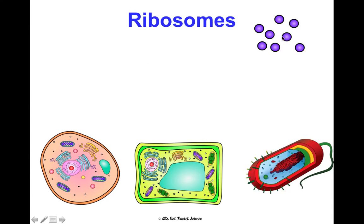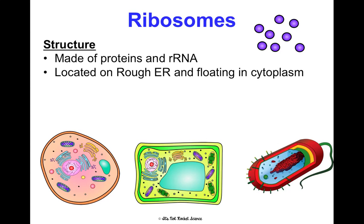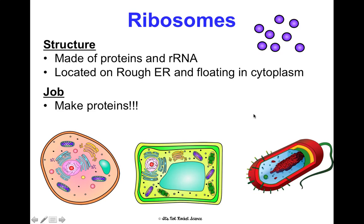Ribosomes look like little dots and are made of proteins and rRNA. They're located on the rough ER and also floating in the cytoplasm. In a prokaryotic cell, they're just floating in the cytoplasm. Their job is to make proteins — so they're made of proteins but also make proteins, and that's super important.